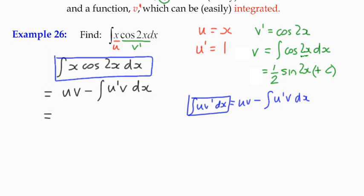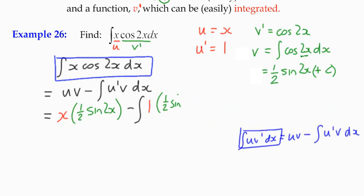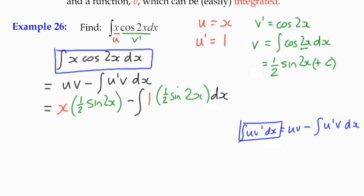What are those bits? Well, we've worked them all out on the right-hand side. So, u is x, and v is a half sine 2x. Now, we're not going to put in the plus c just yet. Minus the integral of u dash, which is 1 multiplied by v, which we've actually already used, which is a half sine 2x dx. So, I've substituted in the four different parts, u and v, u dash and v, into my expression. Now, I can simplify it a little bit before I do that last integration.